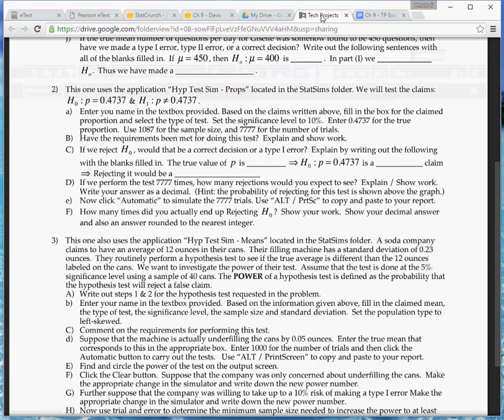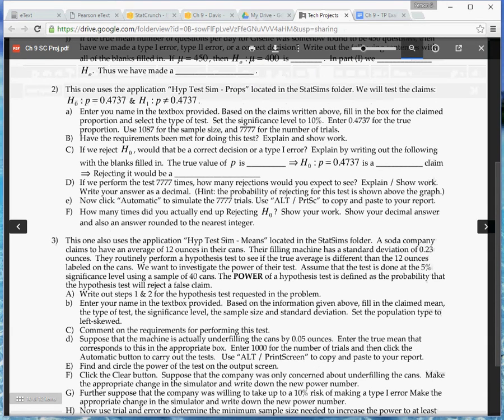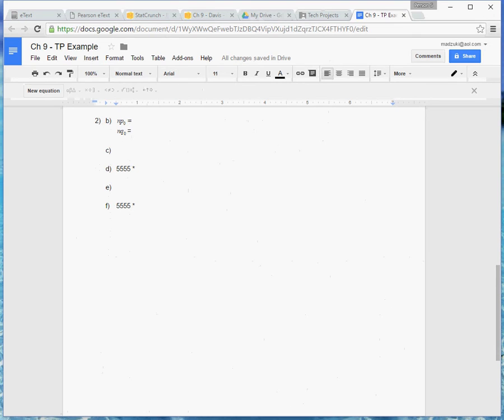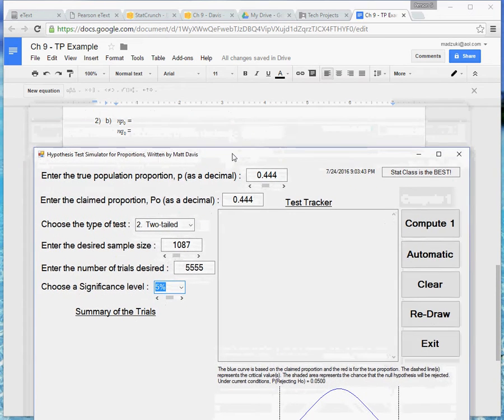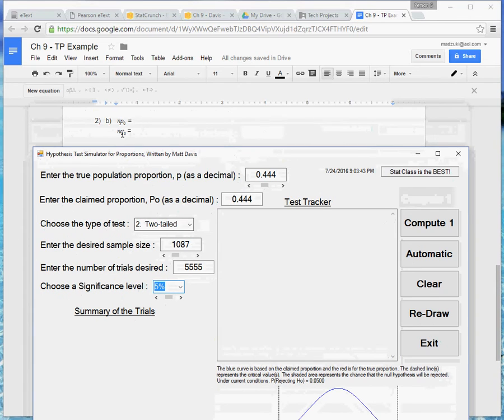And so for me, I would check that. Let's see. Let's pull up the stat sim. Let me go ahead and switch this like that. Pull up the stat sim. So I would want to check NP0. So my N on this is the N of the hypothesis test, which is the sample size. So that's the 1087. And then I'd multiply that by the claimed proportion. So the claimed proportion right here is .444.